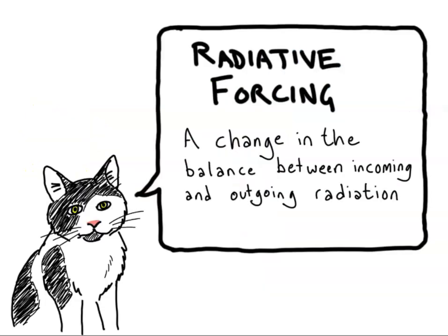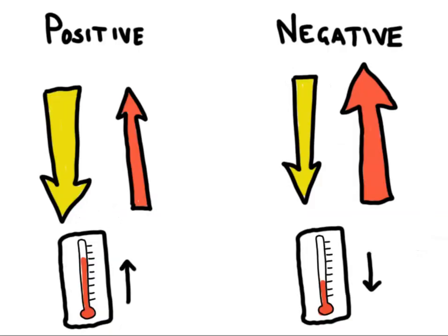Radiative forcing is the amount by which a factor changes the balance between incoming and outgoing radiation. A positive radiative forcing means that more energy is coming in than going out, which will increase the Earth's overall temperature.